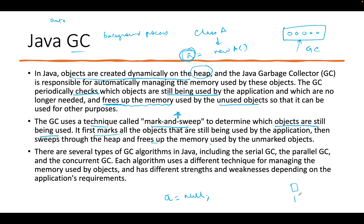Suppose you have some objects: this object is being used, this one is being used, but this one is not. So it has marked the two that are in use. Whatever is unmarked will be cleaned up — that object will be freed up from the heap. There are different GC algorithms and each uses a different technique. But if you have to answer this in an interview, you just need to say what GC does, why GC is important, and what technique it uses to clean up unused objects from the heap.